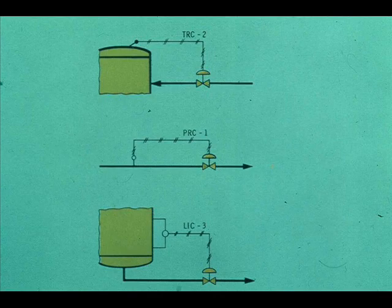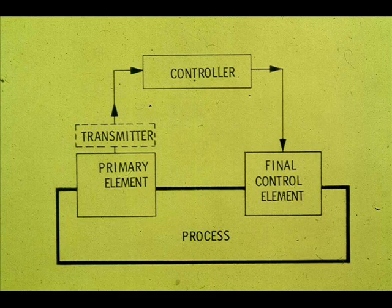Similar automatic control loop configurations could be drawn for the simplified control schemes for temperature, pressure, and level. But let's combine them all into a generalized block diagram. Here are the essential parts of an automatic control loop: the primary element, which measures the process variable; transmitter, if required; the controller; the final control element, which is usually a control valve; and the process being controlled. This general diagram can then be used to describe any automatic control loop.